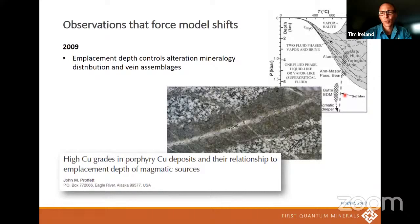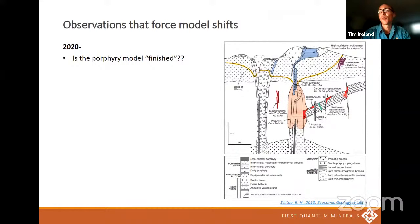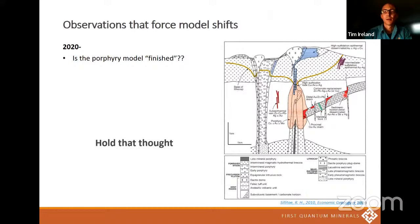So one of the things we'll come back to a bit later is: is the porphyry model finished? What else might there be to improve it? What flexibility might the porphyry system model require? Hold that thought.